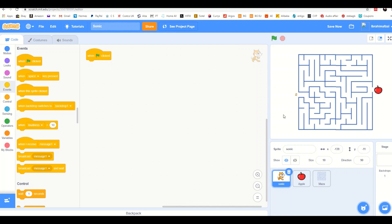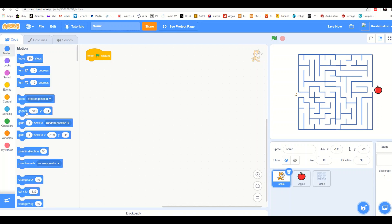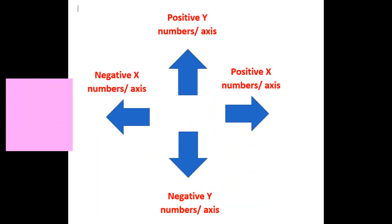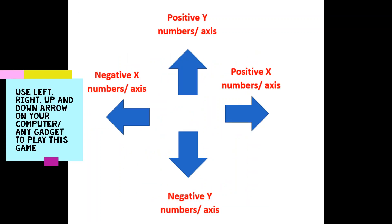Bring 'when clicked' from Events, then add 'go to X and Y'. Based on the position of Sonic, decide the X and Y numbers. The maze has an X and Y axis — the right arrow is positive X, the left arrow is negative X, the up arrow is positive Y, and the down arrow is negative Y.